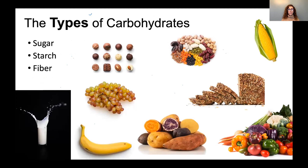Carbohydrates can be found in three forms: sugars, starches, and fiber. Sugar can be the type you think of in candies and desserts, but it can also be naturally occurring — more concentrated in fruits and also found in vegetables. We also have sugar in milk — it's called lactose. So milk is also considered a food rich in carbohydrates.